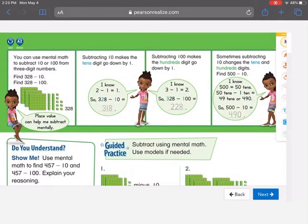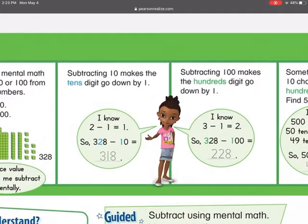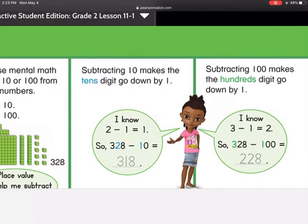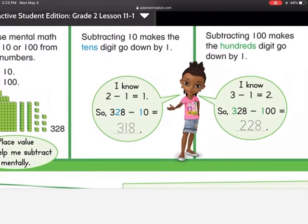You can use mental math to subtract 10 or 100 from three digit numbers. Subtracting 10 makes the tens digits go down by 1. This is what I was talking about earlier. We know that 2 minus 1 equals 1. So 328 minus 10 equals 318. Because you're only subtracting as far as the tens place.